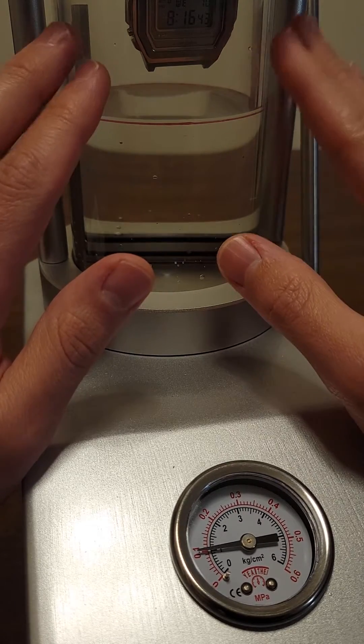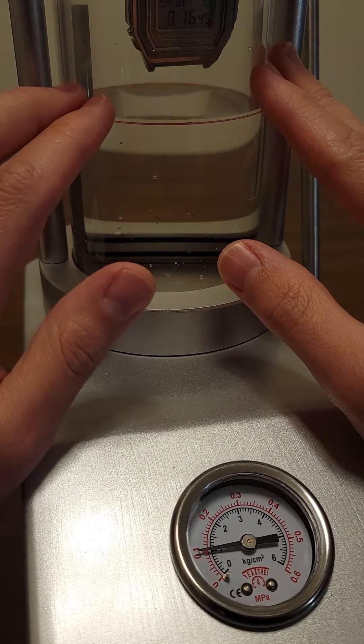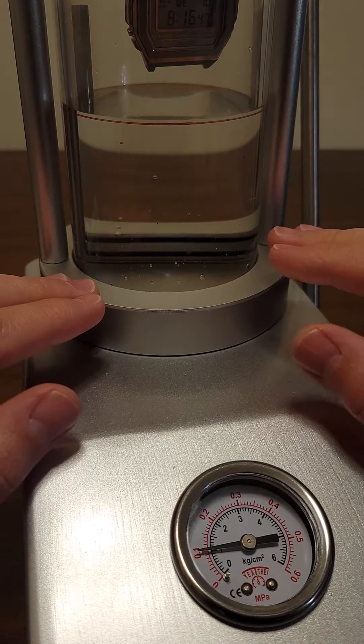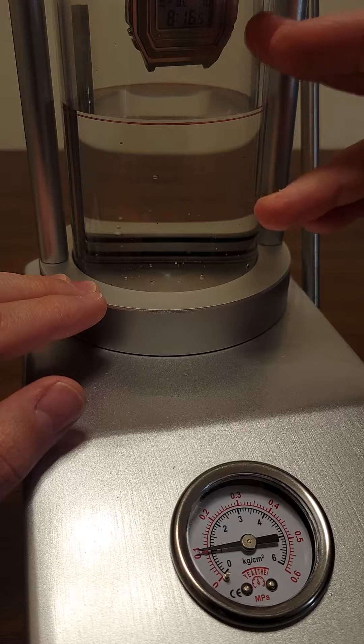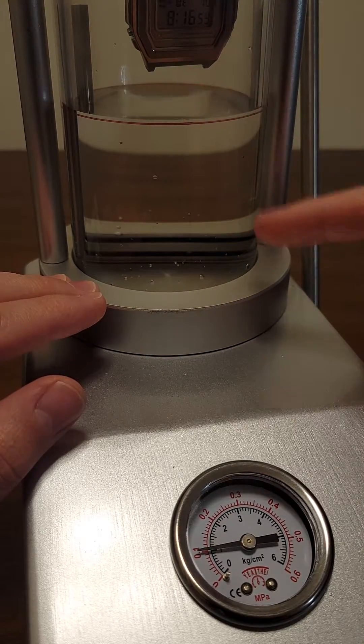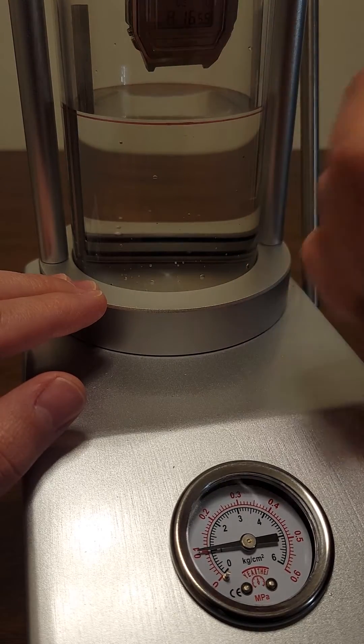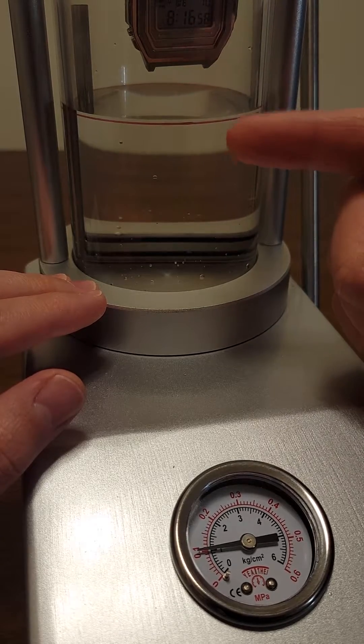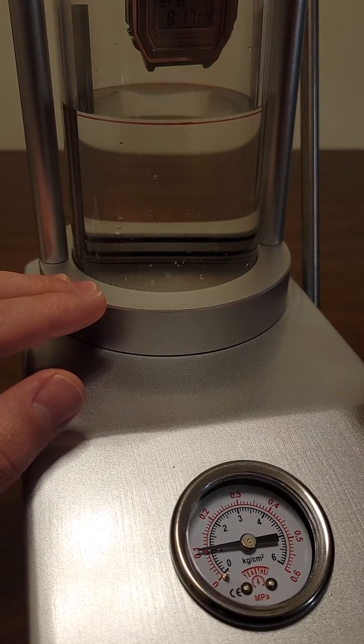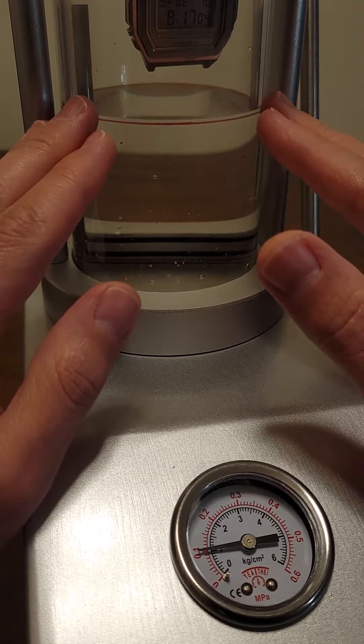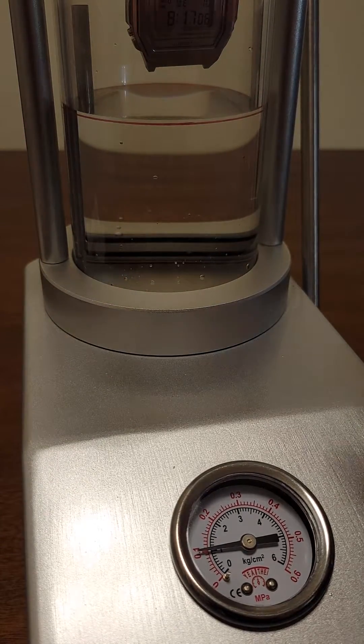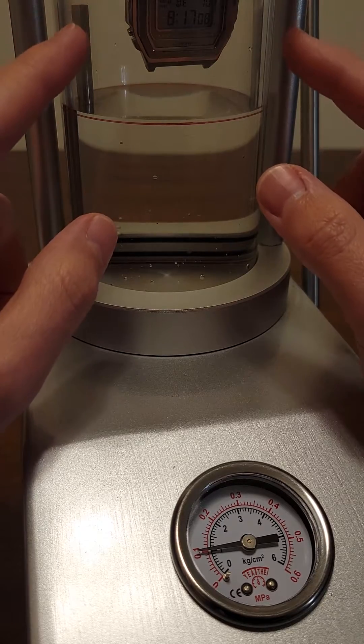Then pressurize this chamber to the test pressure for three minutes, submerge the watch, depressurize the chamber, and watch for any streams of bubbles coming out of the pushers, case back, or if the watch had a stem, the stem.